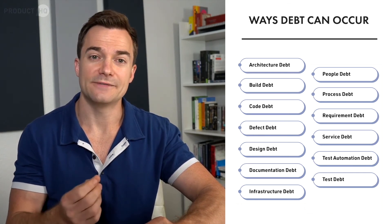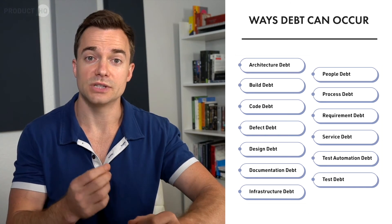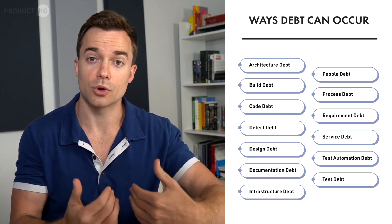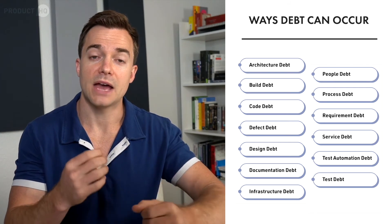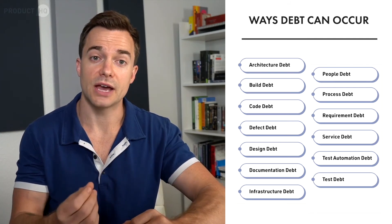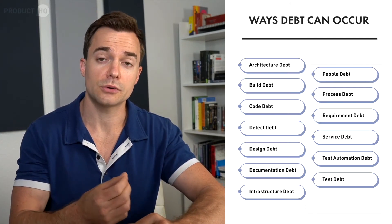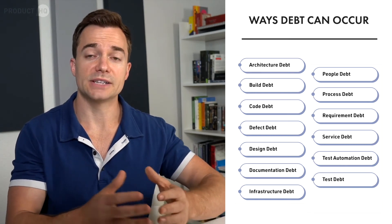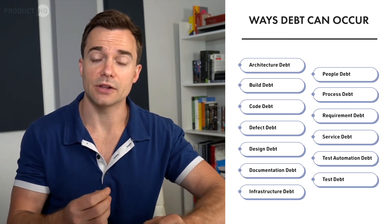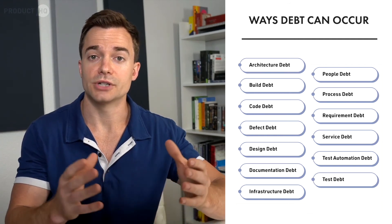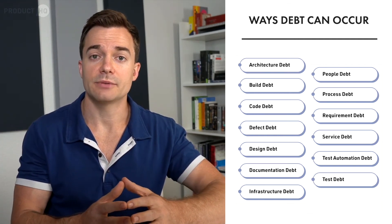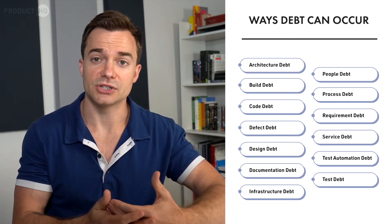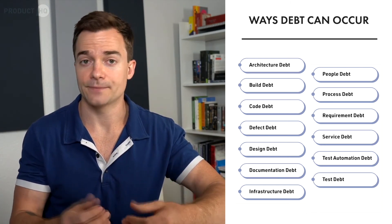The fourth is defect debt, which deals with known defects usually identified during testing that the change control board knows should be fixed but hasn't done so yet due to other priorities or limited resources. Design debt can be discovered by identifying the use of practices that violate the principles of good object-oriented design. Documentation debt refers to problems like missing, inadequate, or incomplete documentation of any kind.